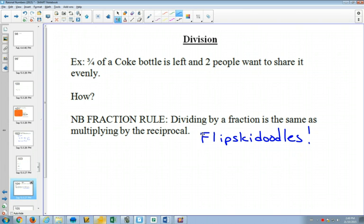So we have three quarters of a bottle of Coke, and you need to divide it by two people. Now two, dividing by two, is a fraction. It's two over one. So we do the flip-ski-doodles, or multiply by the reciprocal, multiply by one half. Three times one is three. And four times two is eight. So each person would get three eighths.